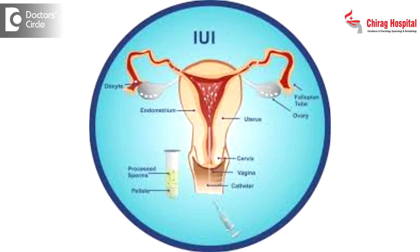IUI, or intrauterine insemination, is a basic form of artificial reproductive technology, also called ART. The reasons why IUI can fail are basically due to the quality of the eggs and the sperms involved. The commonest things we notice are either aged eggs or low quality, unhealthy sperms.